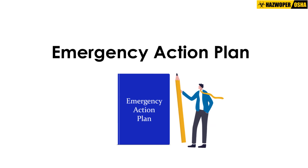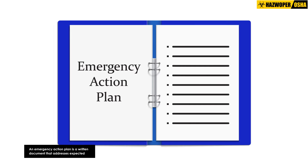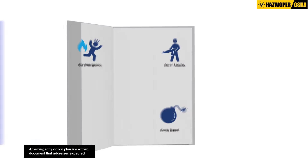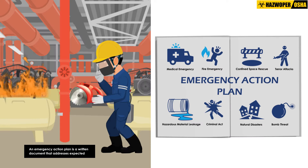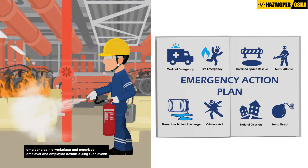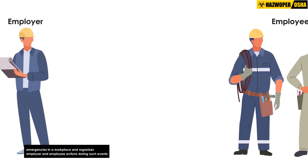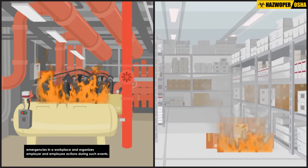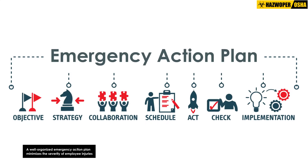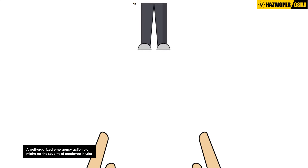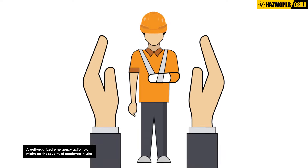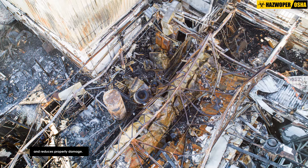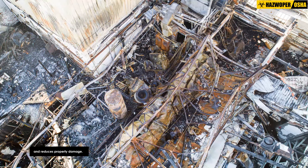An emergency action plan is a written document that addresses expected emergencies in a workplace and organizes employer and employee actions during such events. A well-organized emergency action plan minimizes the severity of employee injuries and reduces property damage.